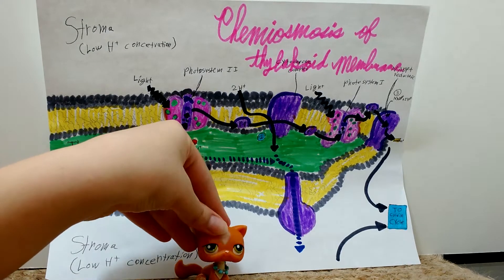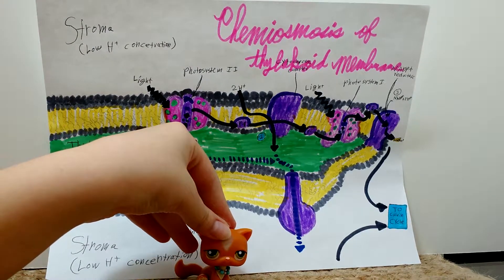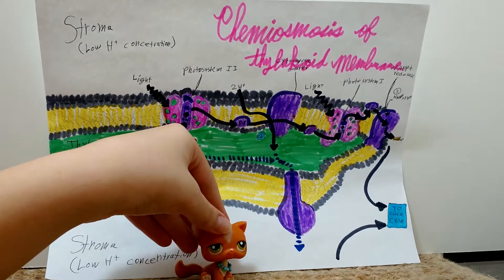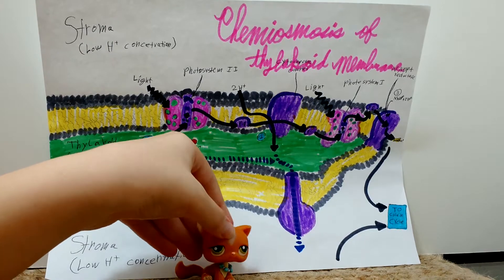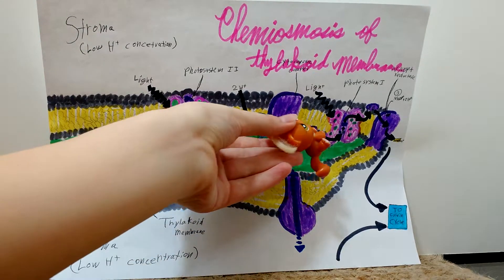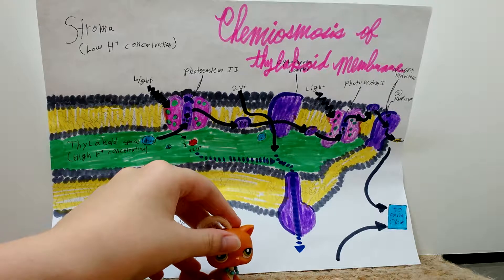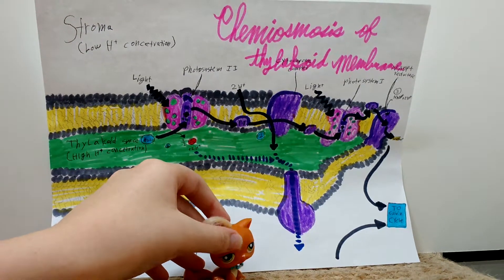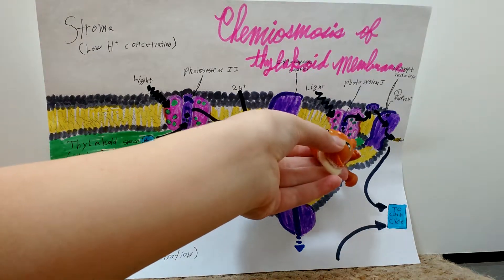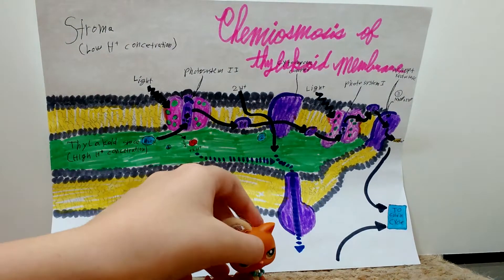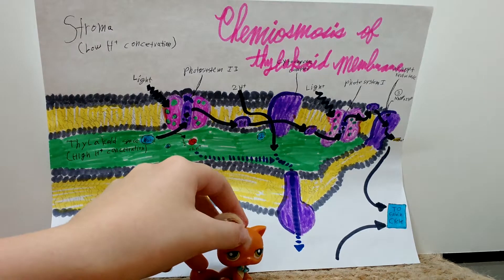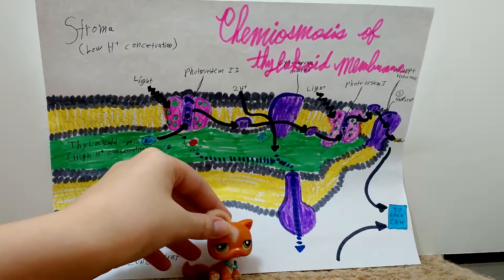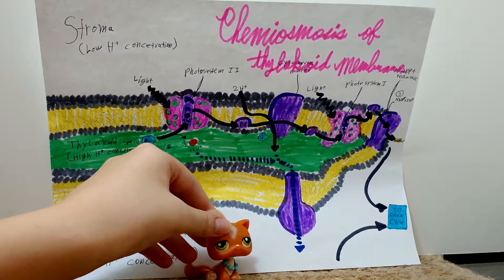The electrons are then separated and taken to plastocyanin, which is another mobile carrier. It takes the electrons to Photosystem I, where the electrons take part in making NADPH. When this happens, ATP synthase then makes ATP.